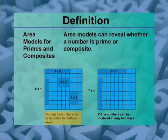On the left, you can see four different models for the number 6. There's a 1 by 6 array, a 6 by 1, a 2 by 3, and a 3 by 2. So there are four different ways of modeling the composite number 6.